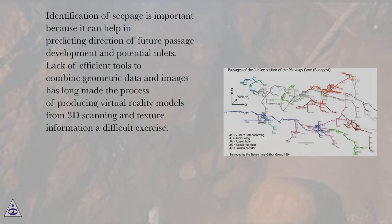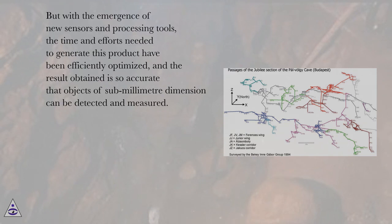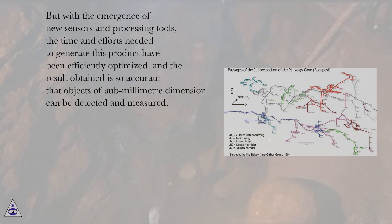Lack of efficient tools to combine geometric data and images has long made the process of producing virtual reality models from 3D scanning and texture information a difficult exercise. But with the emergence of new sensors and processing tools, the time and efforts needed to generate this product have been efficiently optimized, and the result obtained is so accurate that objects of sub-millimeter dimension can be detected and measured.